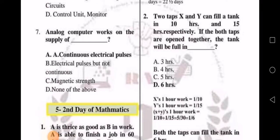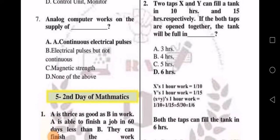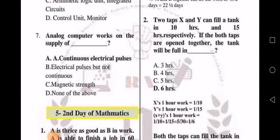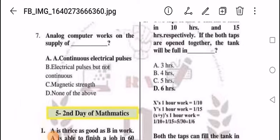Seventh, analog computer works on the supply of A, continuous electrical pulses. B, electrical pulses but not continuous. C, magnetic strength. D, none of the above. So the answer is A, continuous electrical pulses.